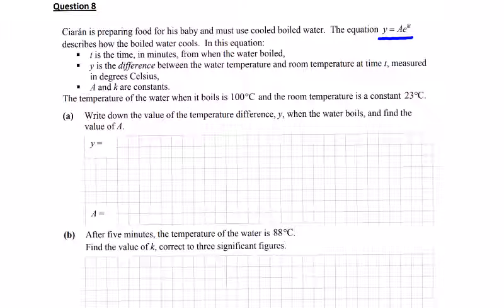T is time. Y is the difference between water temperature and room temperature at time T. A and k are constants, as always. And we're told the temperature of the water when it boils is 100, and the room temperature is a constant, 23.